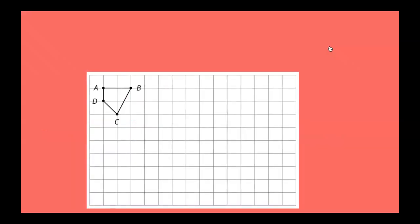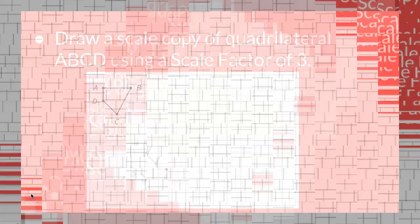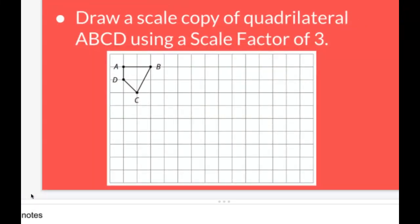So I'm going to ask you to try this problem. The problem is to draw a scaled copy of quadrilateral ABCD using a scale factor of 3. When we draw our scaled copy, the most important thing to remember is that we're going to multiply each of these original side lengths.